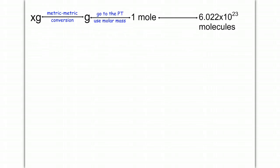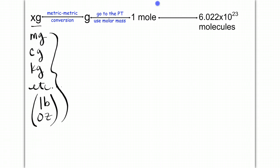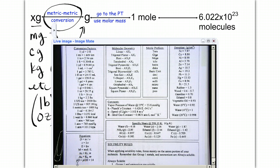So a reminder of the map, where if you have x grams, that might be milligrams, centigrams, kilograms, et cetera, any metric prefix with gram, or if I start you in the English units, it could be pounds or ounces. In all of these cases, the first thing you want to do is convert those to grams. We're going to use our metric to metric or English to metric conversions found on the back of your periodic table.